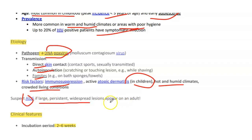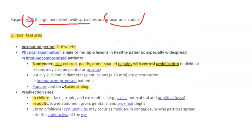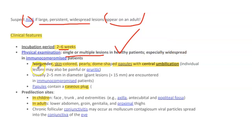Clinical features: the incubation period is about 2 to 6 weeks. On physical examination, you will have single or multiple lesions in healthy patients, while there will be widespread lesions in immunocompromised patients. The lesions are non-tender, skin-colored, pearly dome-shaped papules with a central umbilication.